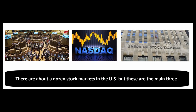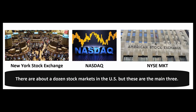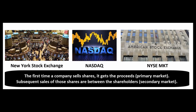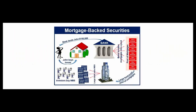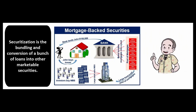Where does the saver buy shares or bonds? There are three major stock markets: the New York Stock Exchange, a face-to-face market; the NASDAQ, a computerized market; and the NYSE MKT, formerly the American Stock Exchange. The first time a company issues shares is called the primary offering, and that money goes to the company. After that, shares trade in the secondary market between shareholders — the company gets no direct benefit from those secondary sales. Securitization is the conversion of smaller loans into marketable securities sold to investors, and that's when trouble began in 2007.